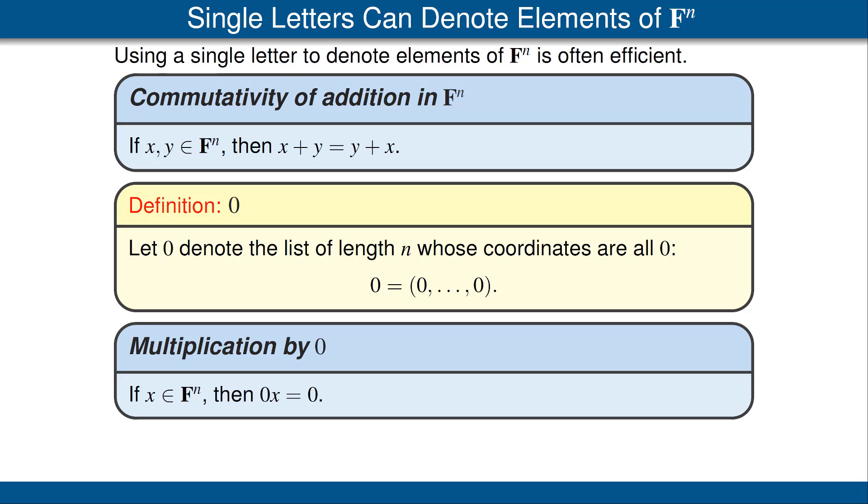For example, consider the following result, which states that if x is in F^n, then 0 times x equals 0. The 0 on the left must be the number 0, because we have not defined the product of two vectors. The 0 on the right must be the vector 0, because the product of a number and a vector is a vector. Remember that the word vector simply means an element of F^n.